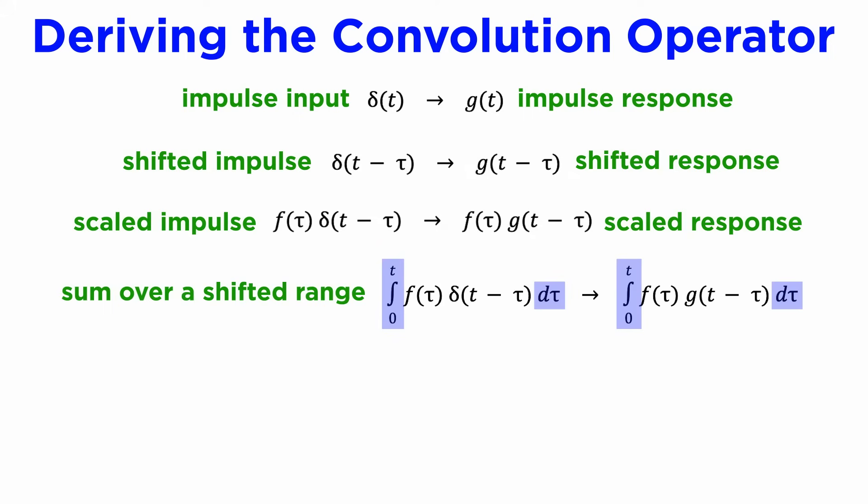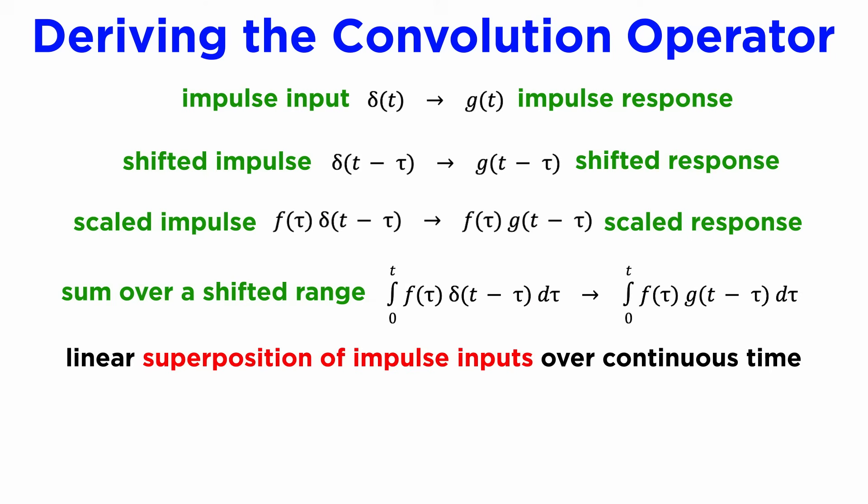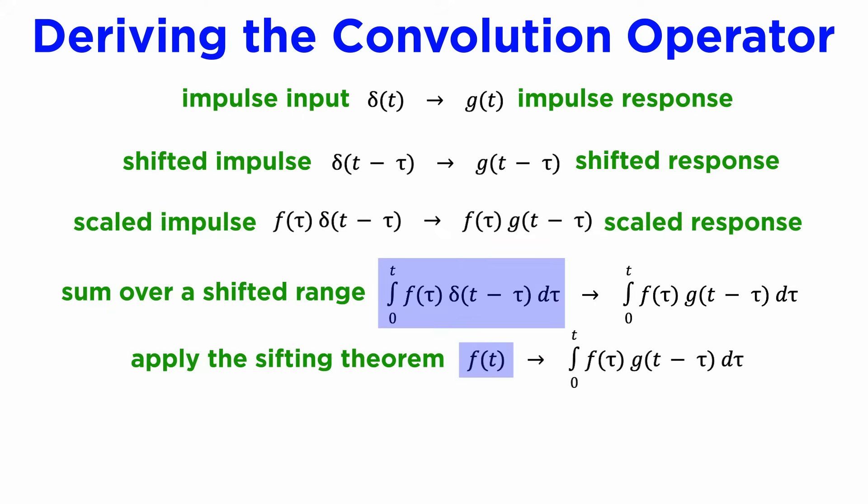We now integrate both sides with respect to tau, which is like an infinite linear superposition of impulse inputs spanning continuous time, all scaled by some time-dependent function, and we can use the sifting theorem on the left side to replace the whole thing with f(t), a generic input forcing function.